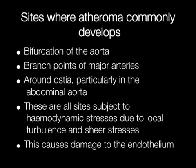The sites where atheroma commonly develops include bifurcation of the aorta and branch points of major arteries around the ostia, particularly in the abdominal aorta. These are sites subject to hemodynamic stresses due to local turbulence and shear stresses, which causes damage to the endothelium where an atheromatous plaque can start to build up.